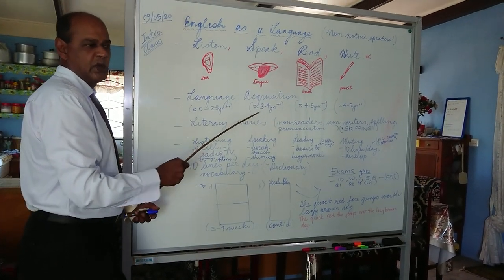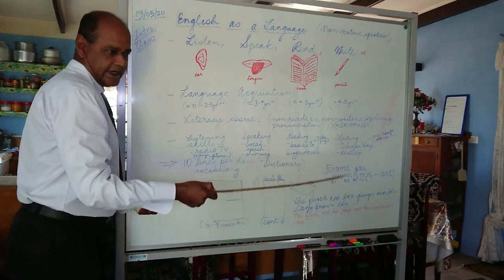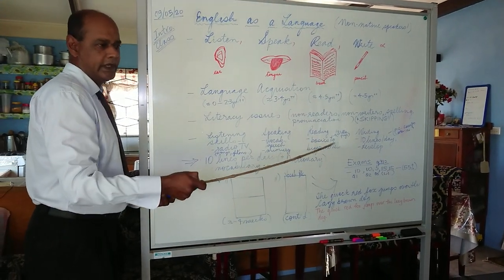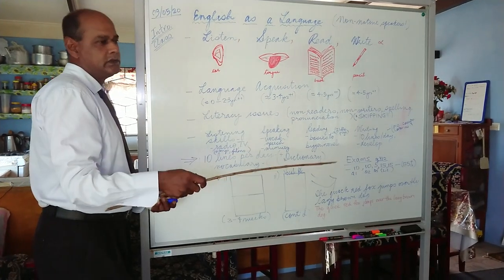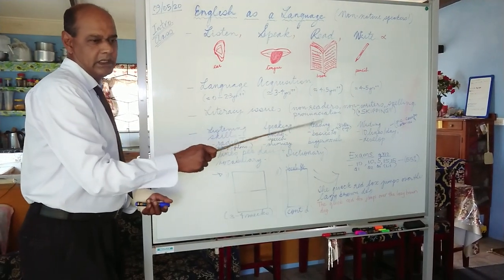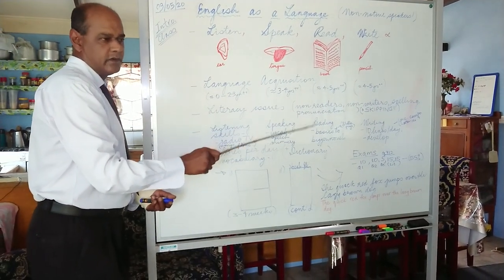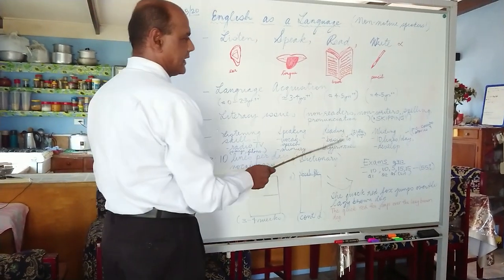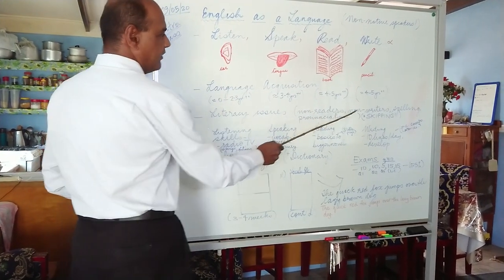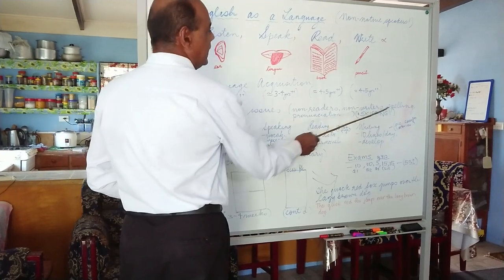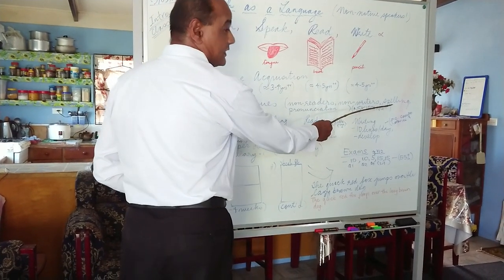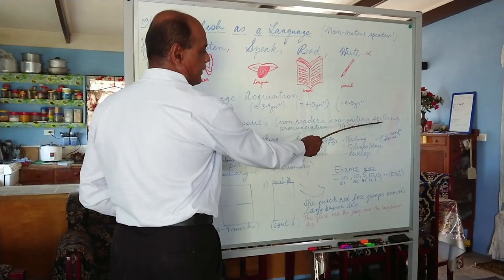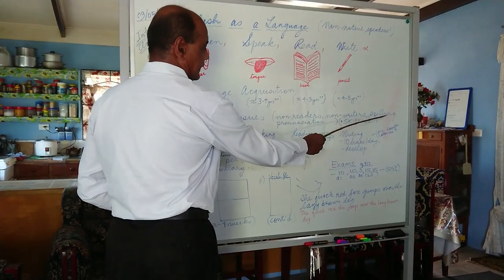There are students who are not able to write essays or answers properly. There are students who are still non-readers — not only in lower years, but even in Year 8 in quite a lot of secondary schools. We have non-readers, non-writers; spelling is a major problem — it's a national, I would say even international, problem. Everywhere you come across people who can't spell things properly.